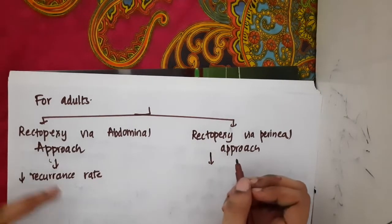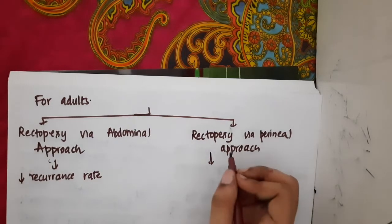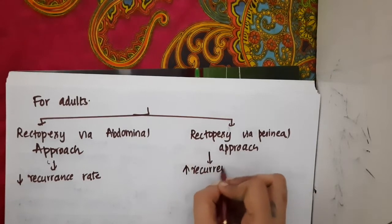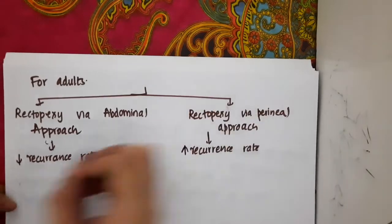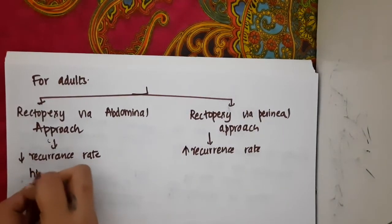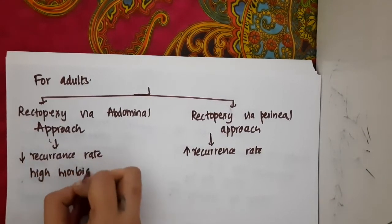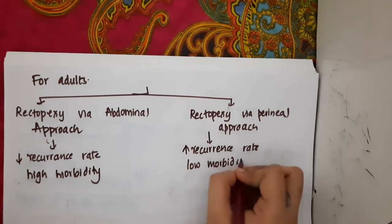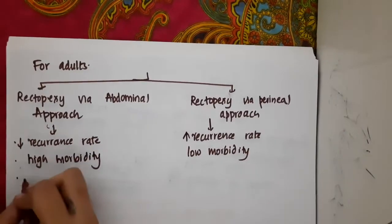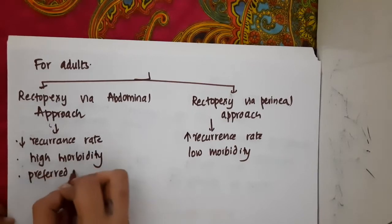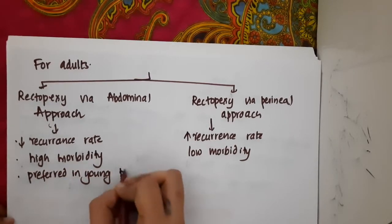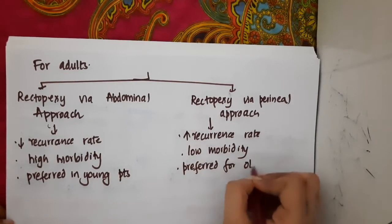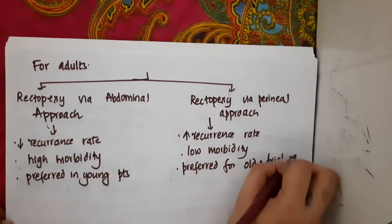There is decreased recurrence rate with rectopexy via abdominal approach, whereas with rectopexy via perineal approach there is increased recurrence rate. Rectopexy via perineal approach is associated with low morbidity and is actually preferred for old and frail patients.